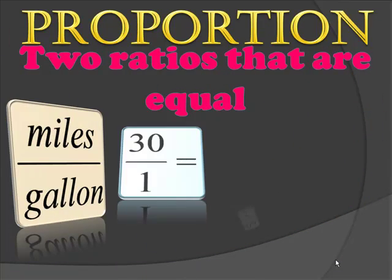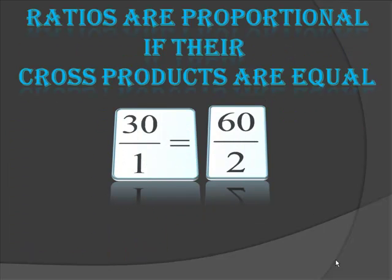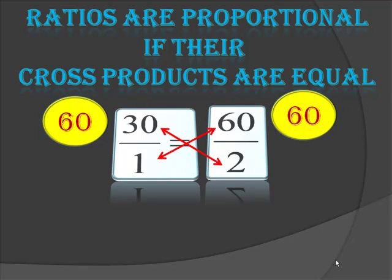Two ratios that are equal are said to be proportional. Here's an example using miles over gallon. If I get 30 miles to one gallon, that ratio is the same as having 60 miles for two gallons. I know that these two ratios are proportional because their cross products are equal. Cross products are when I multiply the numerator of one number times the denominator of another. So 30 times 2 gives me 60, and since 60 times 1 is also 60, I know that these two ratios are equal.